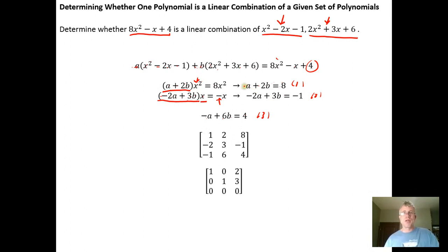So from here, we would get 1, 2, 8. This one would give us negative 2, 3, negative 1. And from here, we would get negative 1, 6, and 4. So we have the A and B column. This is an augmented matrix.